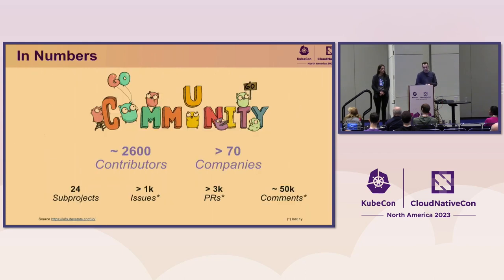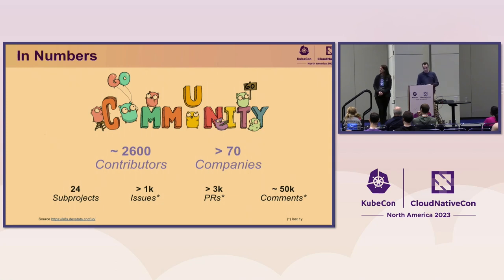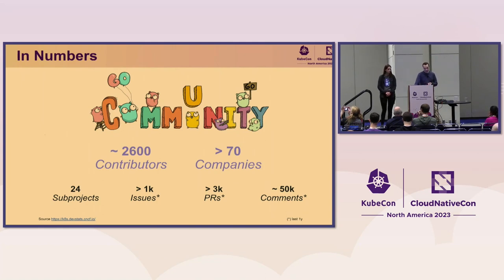In numbers, we have a lot of contributors — more than 2,600 — from over 70 companies all over the globe. We have 24 subprojects in the SIG and more than 3,000 PRs, and this is just for the last year. If you look back to the V1 Alpha 1 days, these numbers were actually even higher.